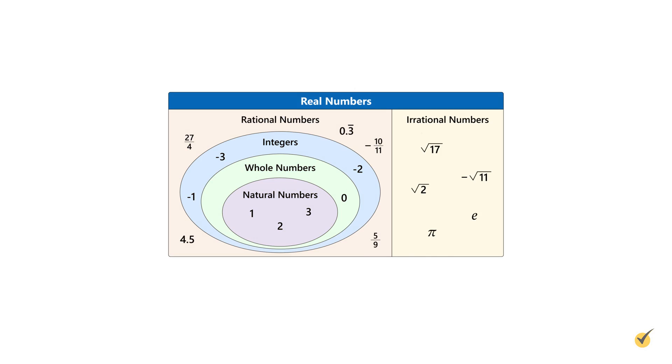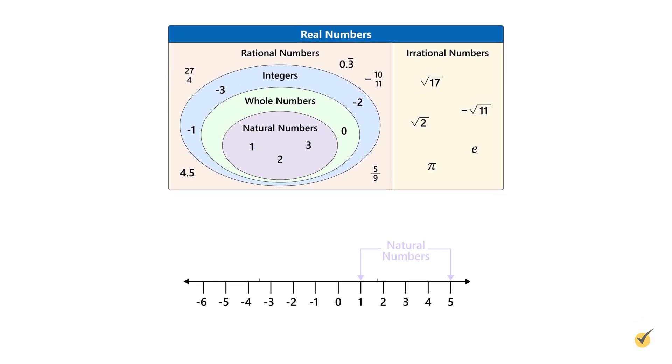This Venn diagram is a visual representation of how real numbers are classified. You can see that rational numbers include natural numbers, whole numbers and integers. Natural numbers comprise the smallest subset, which is also known as the set of counting numbers.